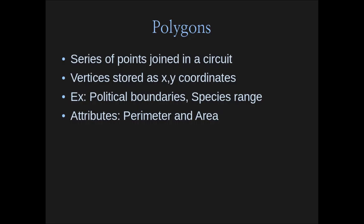Finally we have polygons — a series of points joined in a circuit so they form some complete shape. These can be political boundaries, species ranges, and other things like that. Vertices are stored by XY coordinates in a particular order. Polygons have an additional attribute: a perimeter analogous to line length, but also an area. So now we have a point in space, a length, and an area.